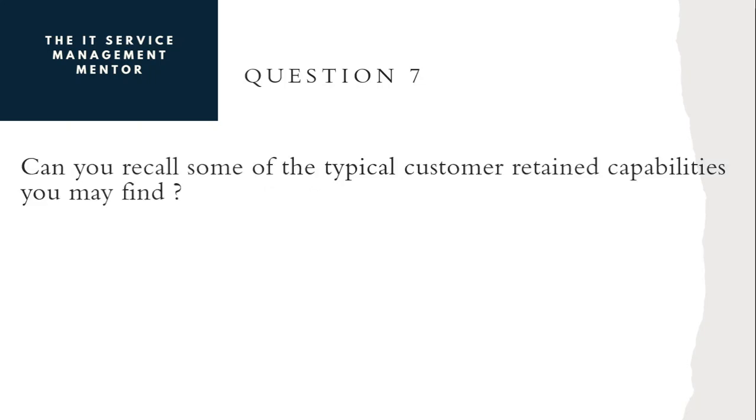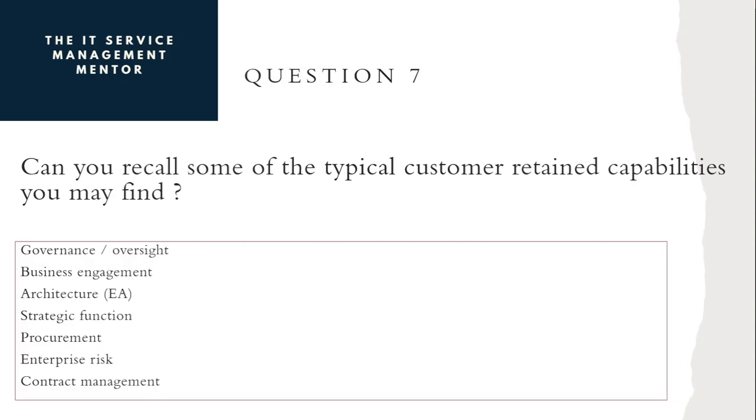Question number seven. Can you recall some of the typical customer retained capabilities you may find? Governance, oversight, business engagement, architecture, enterprise architecture, strategic function, procurement, enterprise risk, contract management.